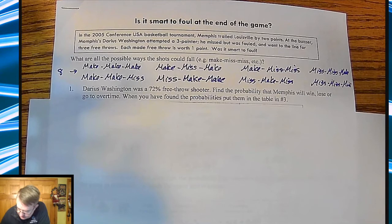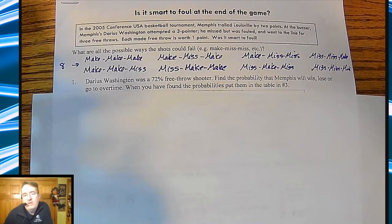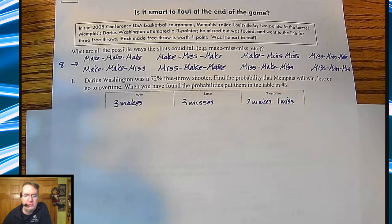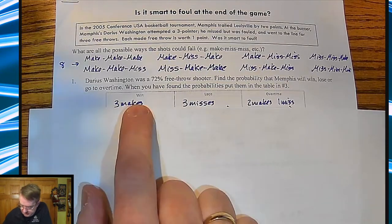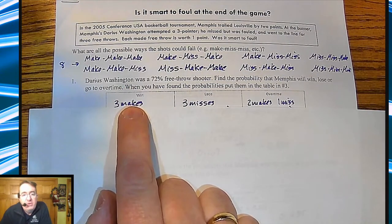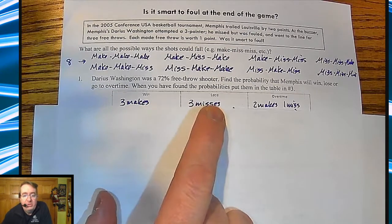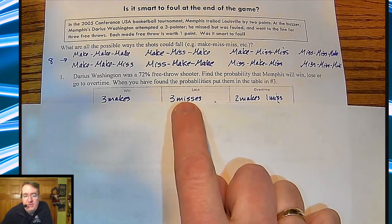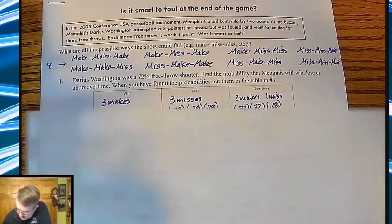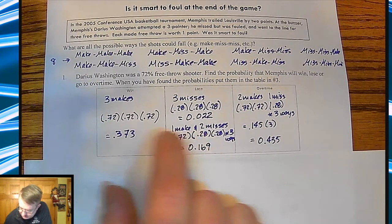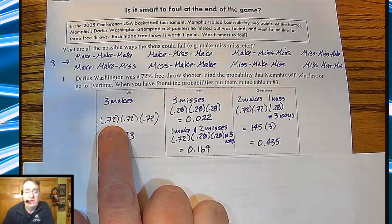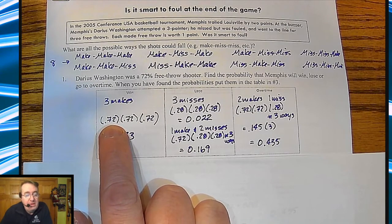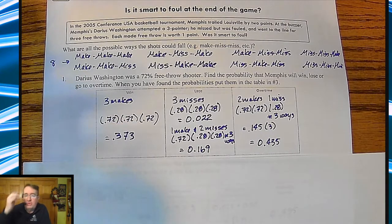We have to figure out how many different ways there could be to win. Darius Washington was a 72% free throw shooter. If they're going to win, he needs to make all three baskets. If they're going to go into overtime, he needs to make two out of three. To lose, he either needs three misses or one make and two misses. The probability of him making all three, assuming independence, is 72% times 72% times 72%.